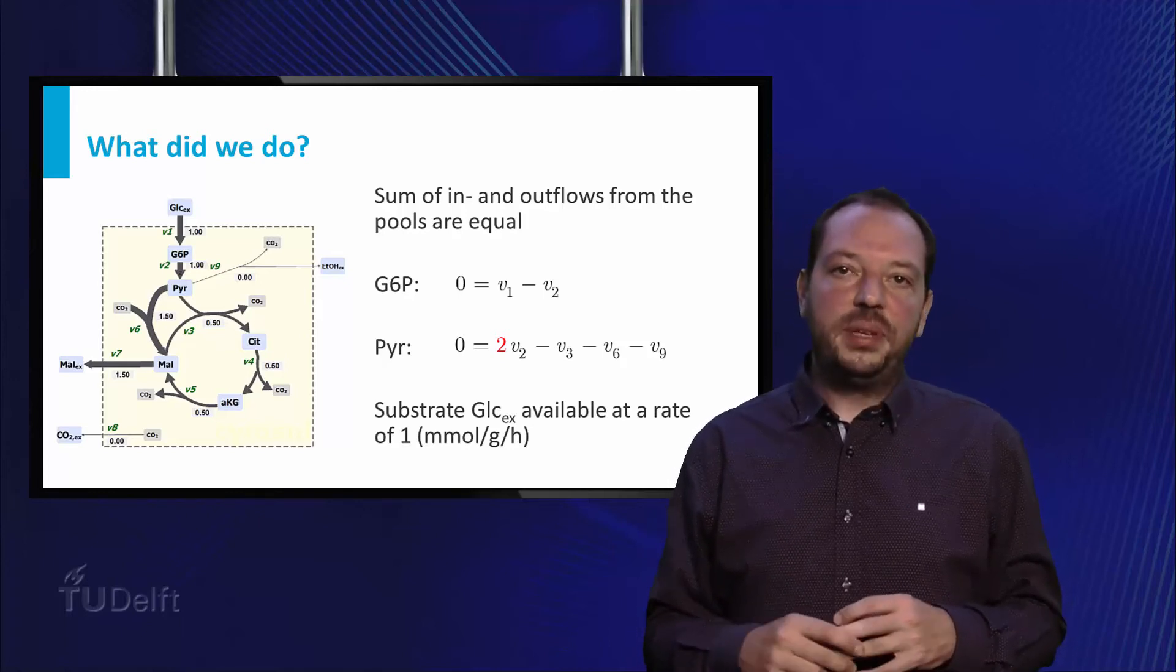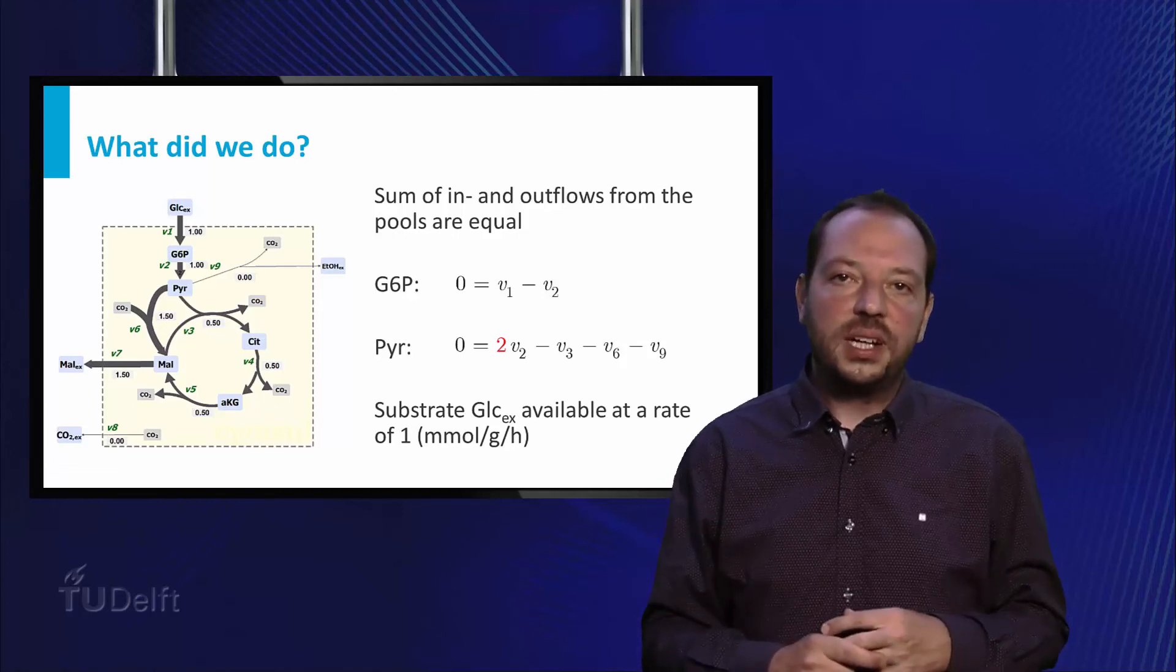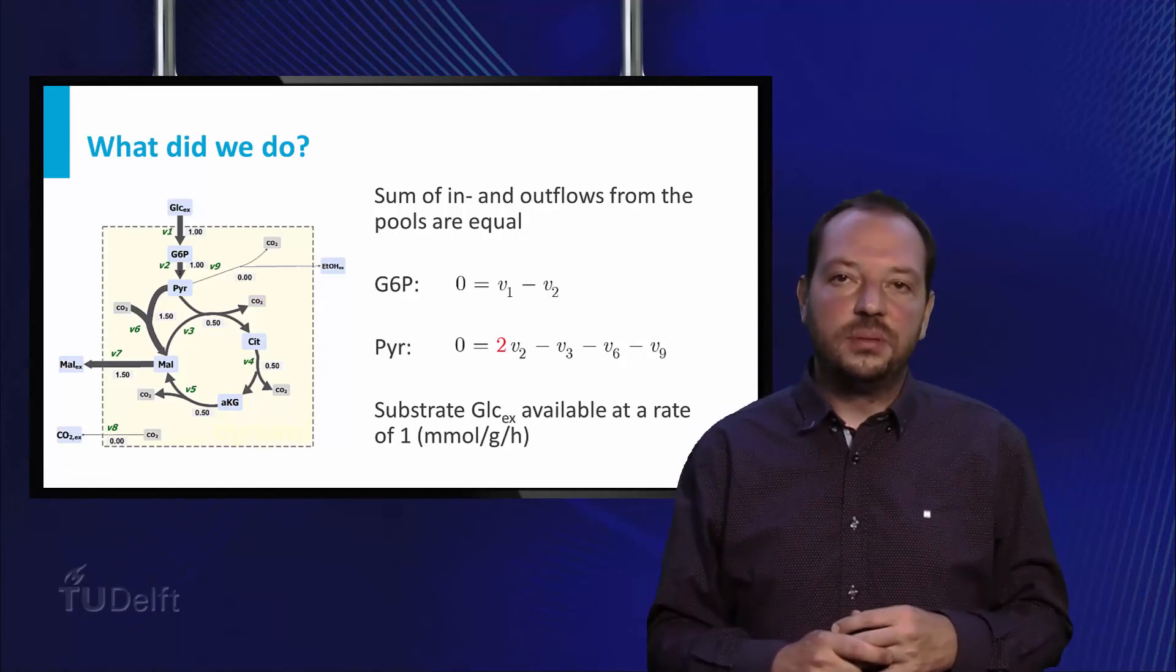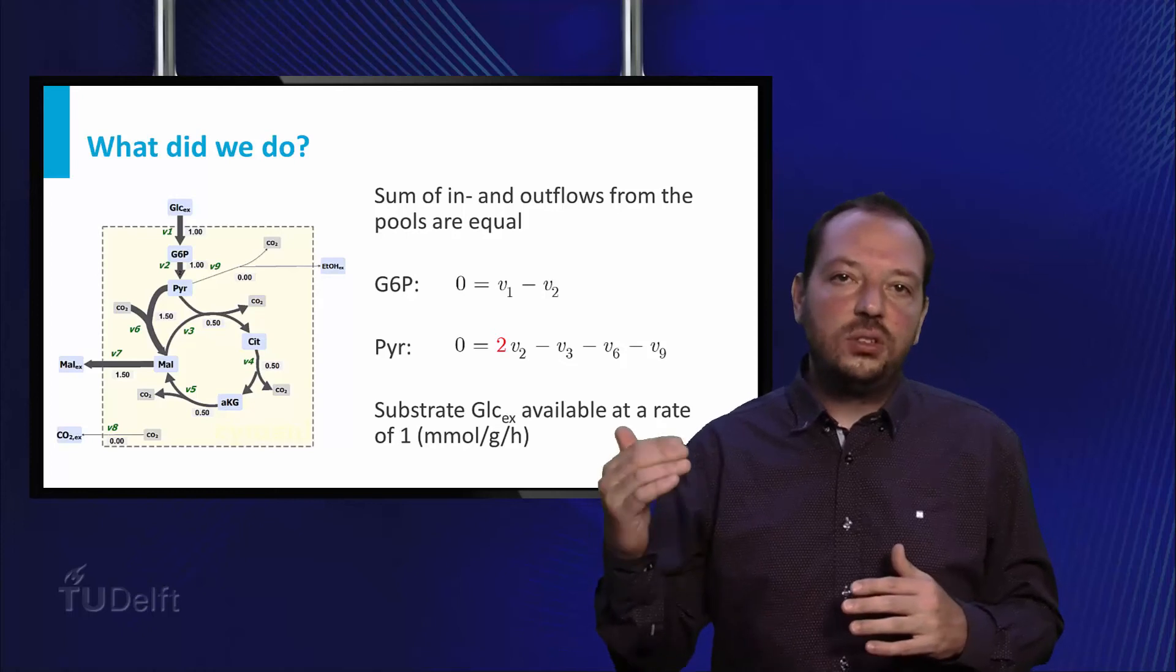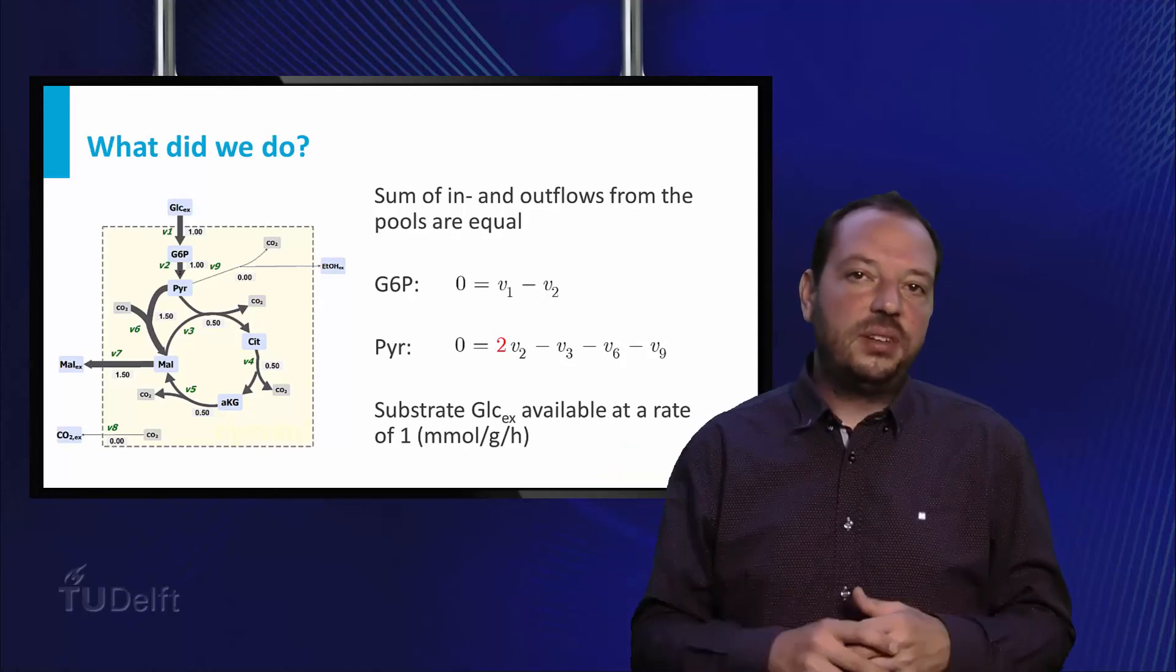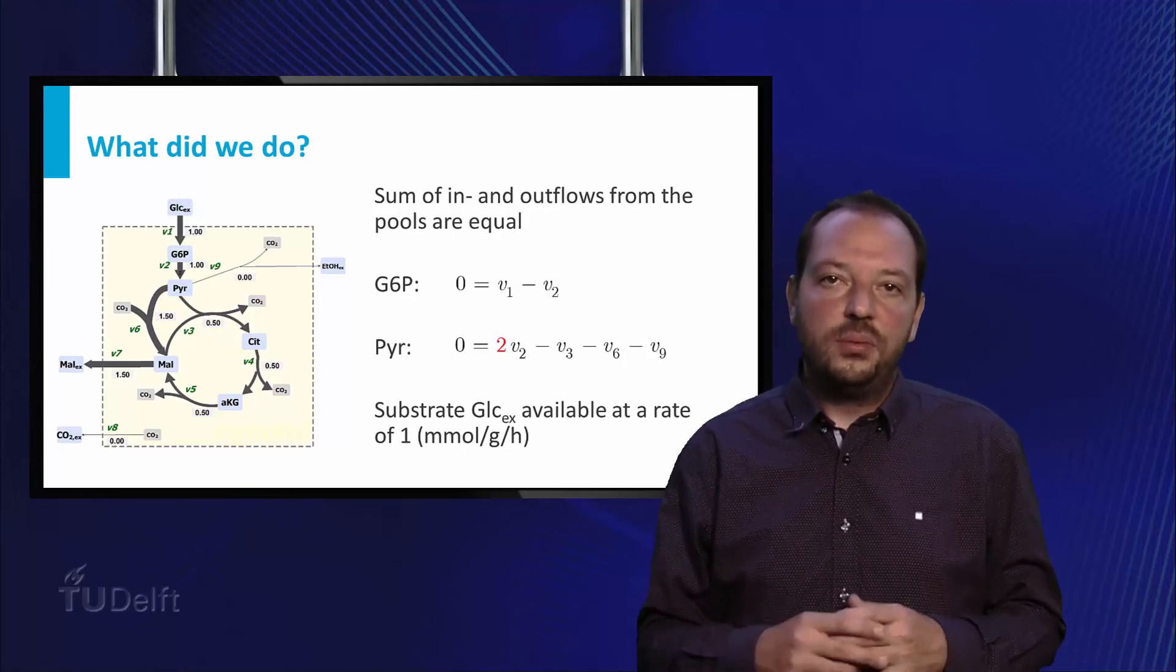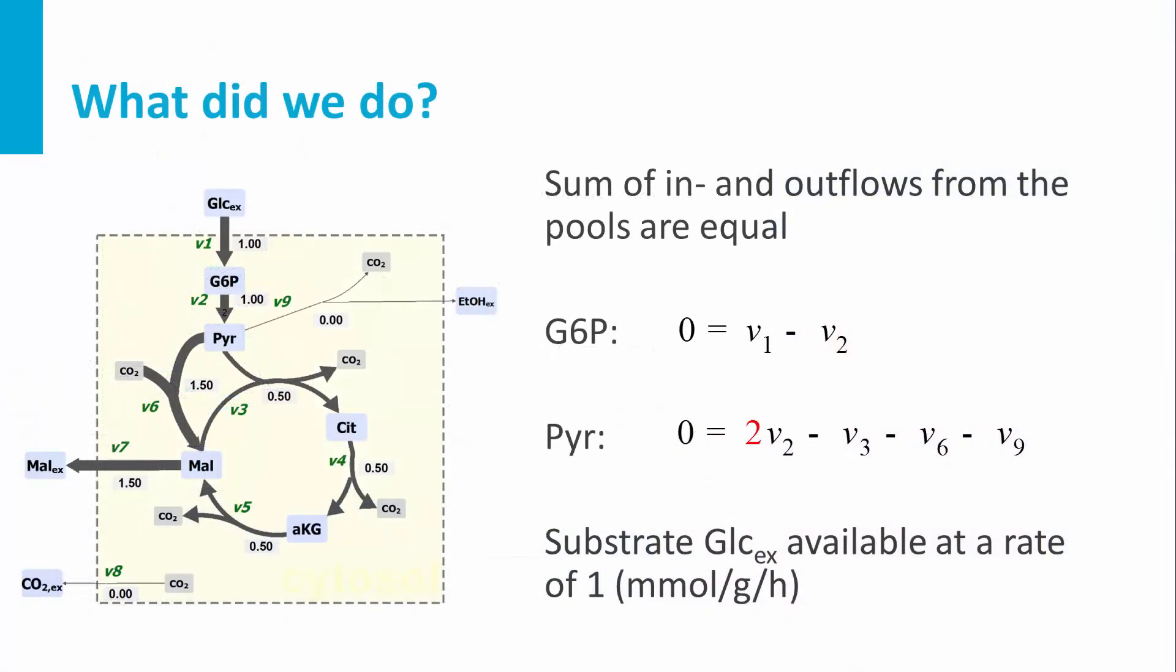If we look into the single metabolites, we can see that the sum of the incoming and outgoing flux at each node is equal. There is no accumulation or depletion of intracellular metabolites. This can be translated into equations of fluxes at each node. For example, for glucose-6-phosphate we obtain 0 equals V1 minus V2, and for pyruvate 0 equals V2 multiplied by 2 minus V3 minus V6 minus V9.